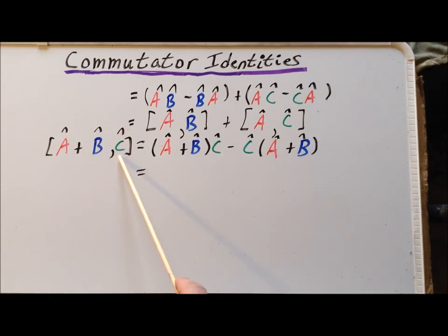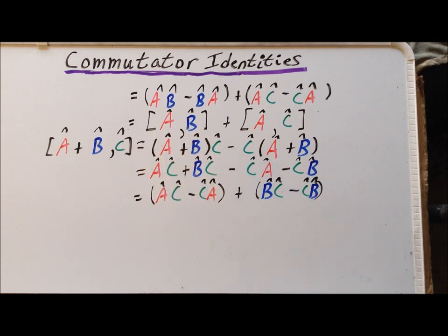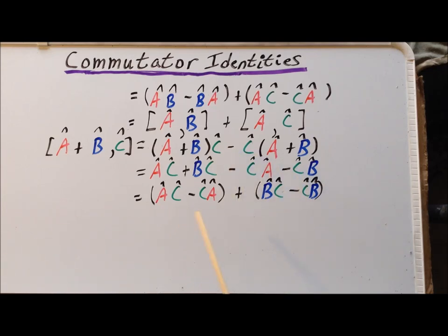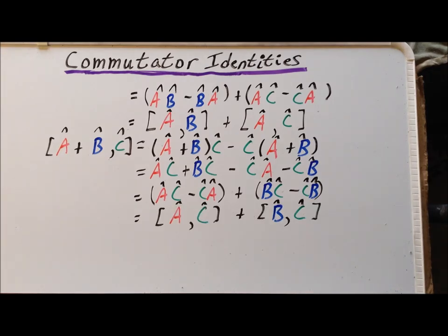For the commutator of A plus B with C, using the definition we have (A plus B) on C minus C on (A plus B). Using the distributive law gives AC plus BC minus CA minus CB. Combining AC minus CA and BC minus CB, we recognize two commutators, giving the result: [A+B, C] = [A,C] + [B,C].